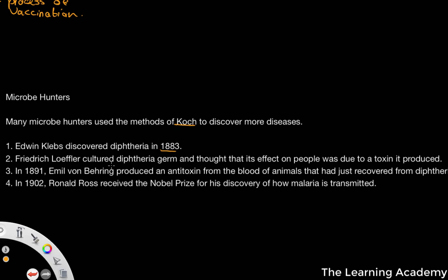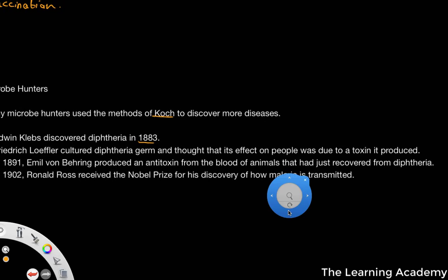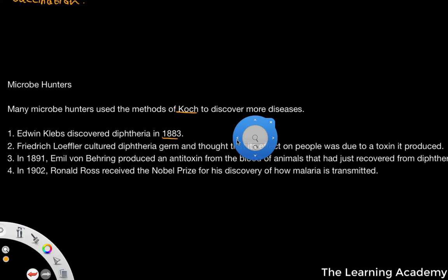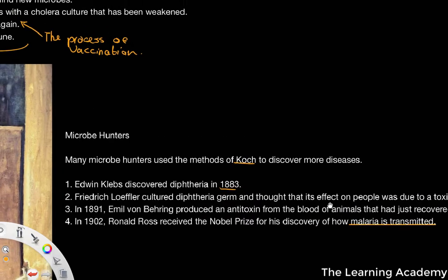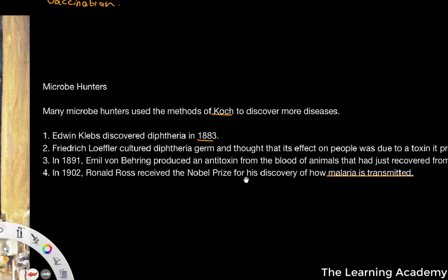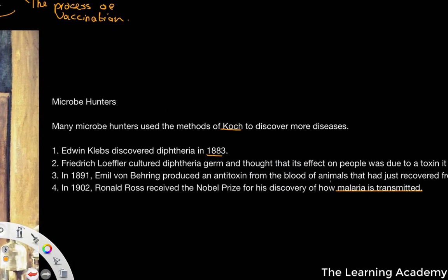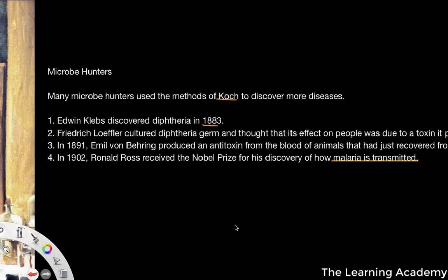In 1891, Emil von Behring produced an antitoxin from the blood of animals that had recovered from diphtheria, beginning the development of a vaccination for diphtheria. Then in 1902, Ronald Ross received the Nobel Prize for the discovery of how malaria is transmitted. A number of different diseases had now been identified, their microbes found, and vaccinations and possible cures were in development.